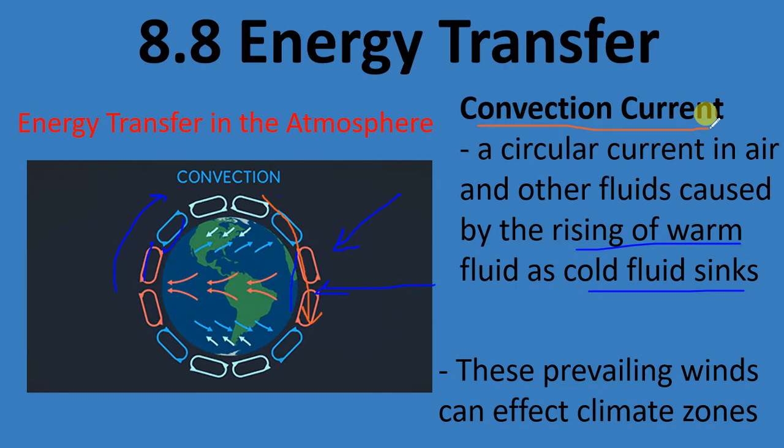Additionally, the prevailing winds can affect the climate zones. All of this energy being moved around creates winds around the globe that distribute energy to different places.